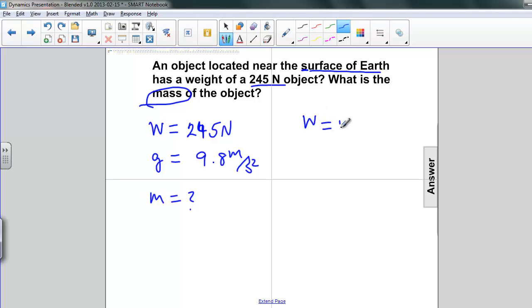Writing our weight and mass relationship, W equals mg. We're after the mass, so we want to get mass by itself, so we have to divide both sides by g. And we get mass equals W divided by g.